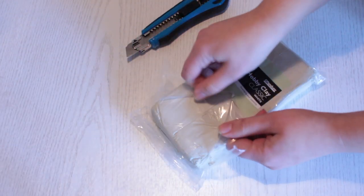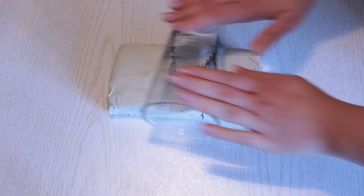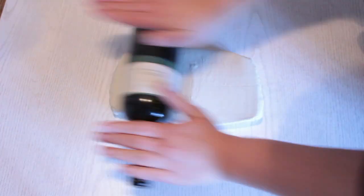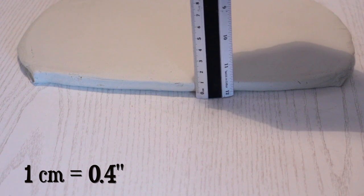Now open up the package and then lay it flat on the table. You can either use a rolling pin, a wine bottle or a glass to roll it flat. Choose the rolling device you prefer to work with and then roll it flat until it's 1 cm thick.